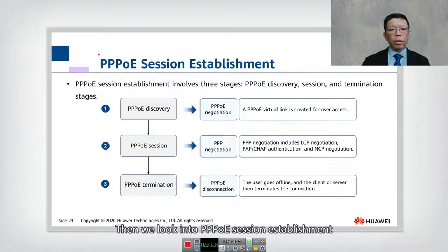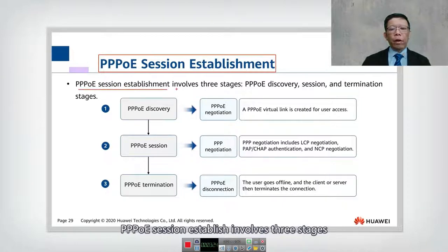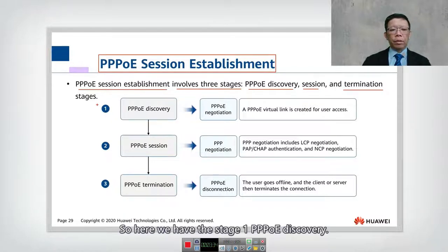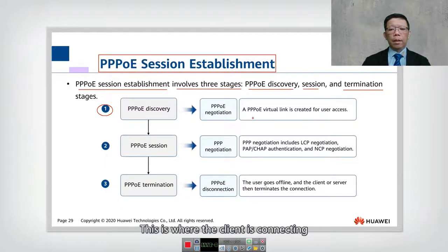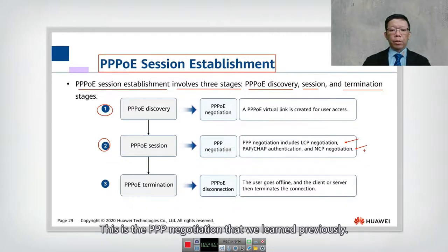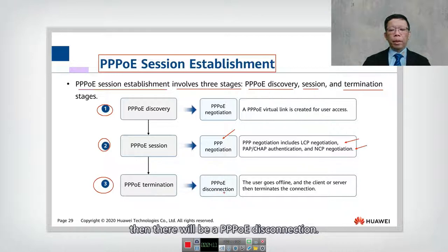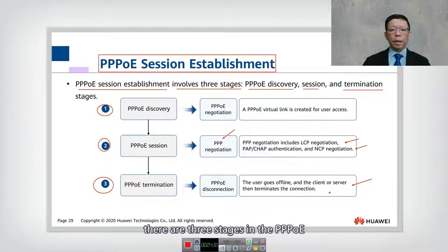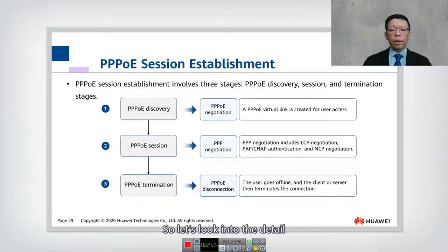PPPoE session establishment involves three stages: the discovery stage, the session stage, and the termination stage. In stage one, PPPoE discovery, a PPPoE virtual link is created connecting the client to the server. In stage two, the PPPoE session is established, where PPPoE negotiation takes place including the Link Control Protocol and Network Control Protocol. Finally, if the client wants to disconnect, stage three is PPPoE termination, where the client and server terminate the connection.